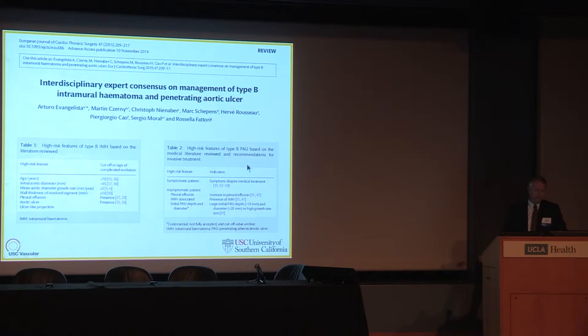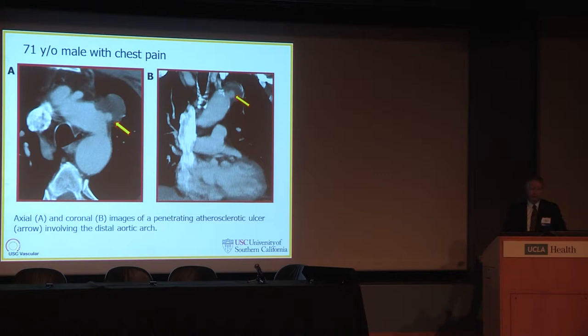For the pure penetrating aortic ulcer, symptomatic patients as well as asymptomatic patients with a pleural effusion, intramural hematoma, or an initially deep penetrating aortic ulcer are candidates for repair. This is one patient taken care of at our own institution — I think all of us would probably intervene on a patient such as this who presented with chest pain, a large penetrating aortic ulcer, and significant intramural hematoma surrounding it.